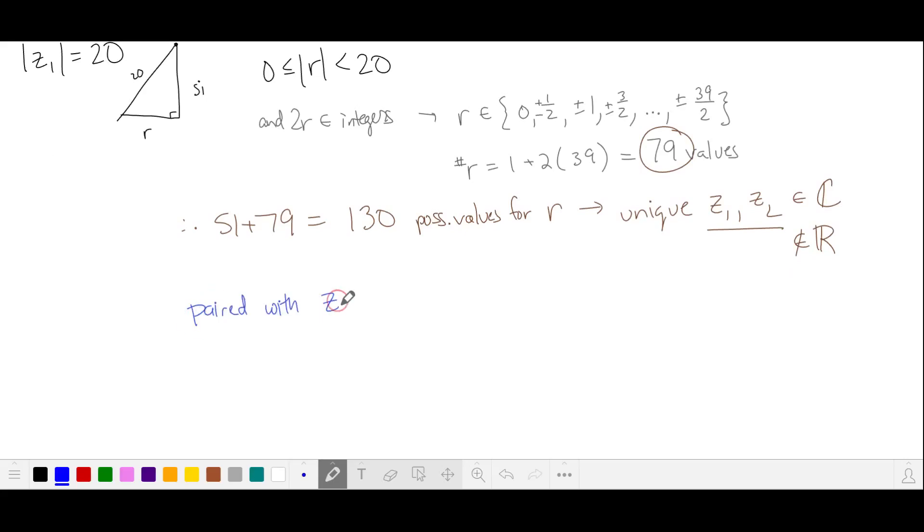Our third root, z3, is going to be one of our remaining real solutions with a magnitude of either 13 or 20. So we take our 130 complex solutions, and each of them can match up with one of these four real solutions for 520 polynomials.